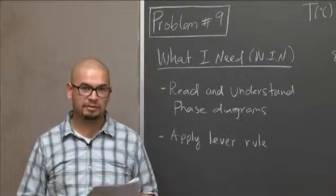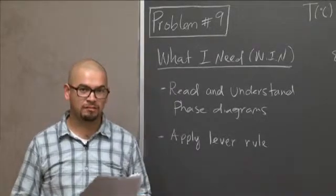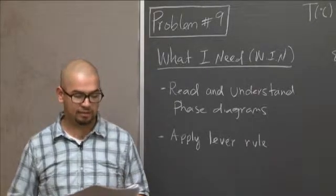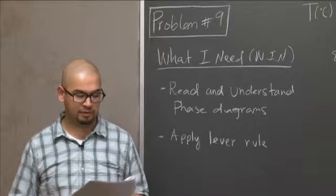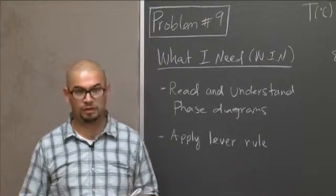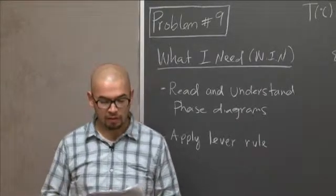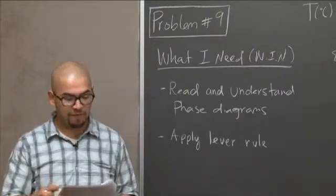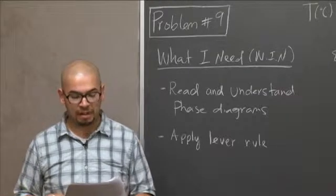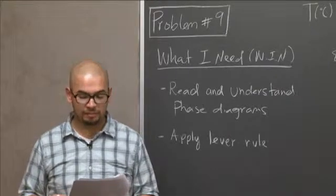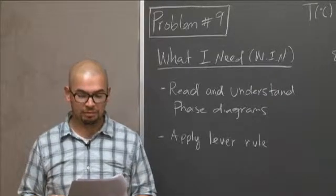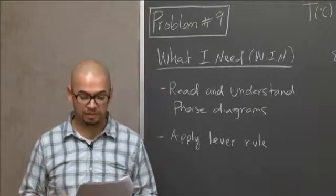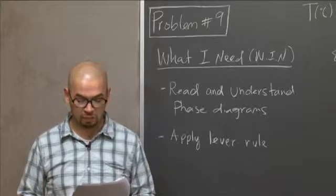Hi, I'm Sal. Today we're going to solve problem nine of fall 2009, the final for 3.091. The problem reads: the phase diagram of the binary system neodymium-praseodymium, Nd-Pr, is given below.